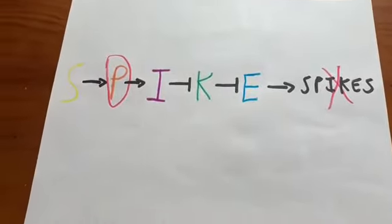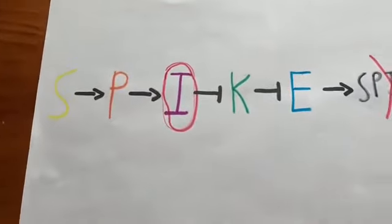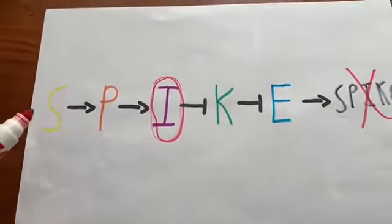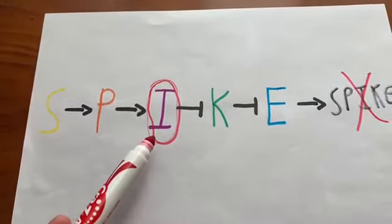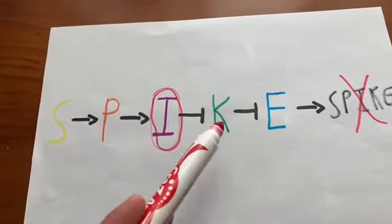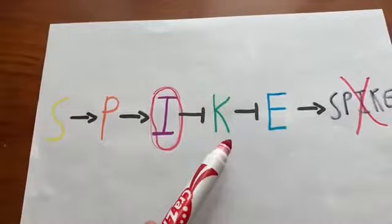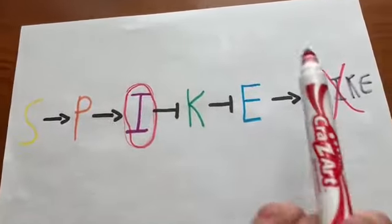Now how about I? Let's say I is mutant. S activates P, P activates I, but in this case, I is mutant. So I cannot repress K, K represses E, so spikes are not made.